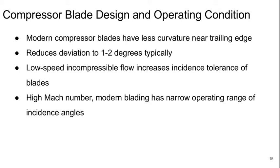So let's talk a little bit about compressor blade design and operating conditions. Modern compressor blades tend to have more of the curvature near the leading edge and less curvature near the trailing edge. This can reduce the deviation to 1 to 2 degrees normally.